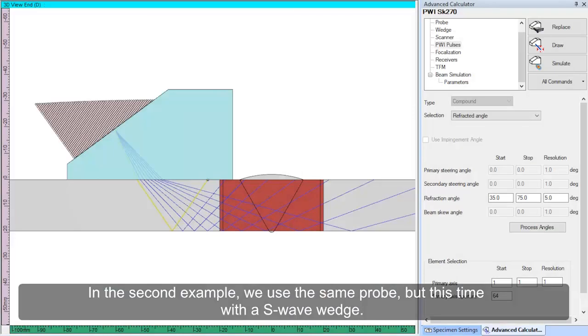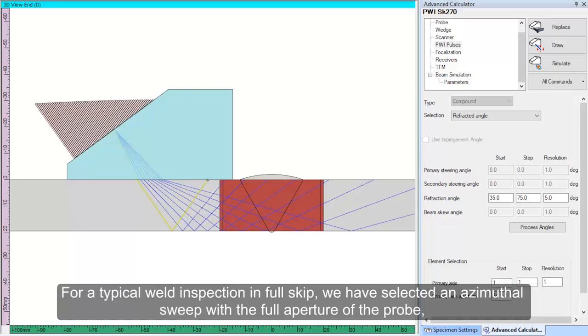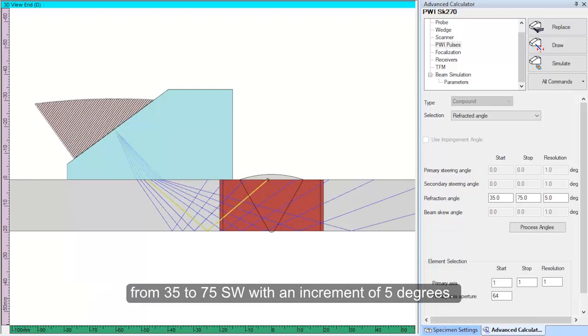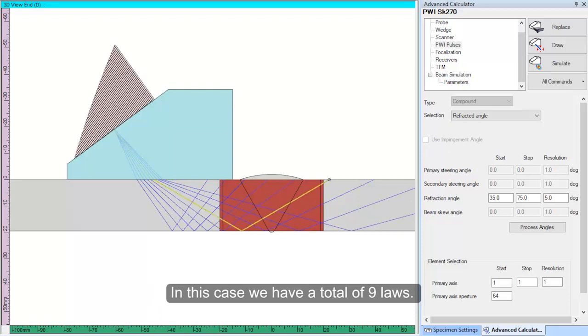In the second example, we use the same probe, but this time with a shear wave wedge. For a typical weld inspection in full skip, we have selected an azimuthal sweep with the full aperture of the probe from 35 to 75 degrees shear wave, with an increment of 5 degrees. In this case, we have a total of 9 laws.